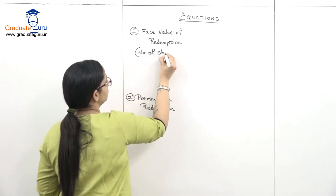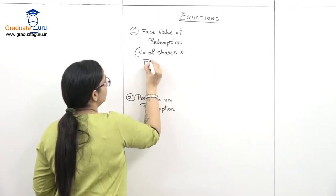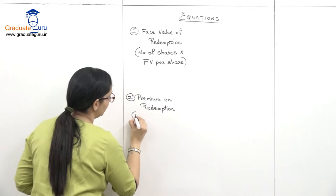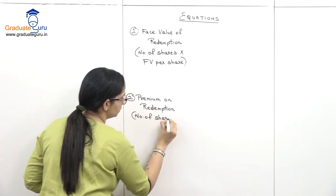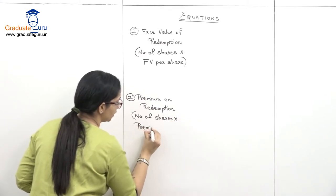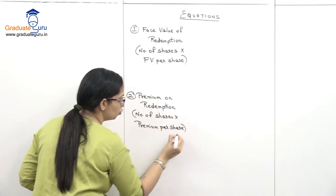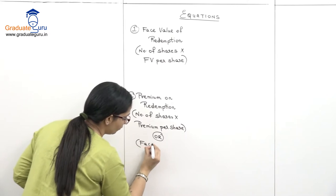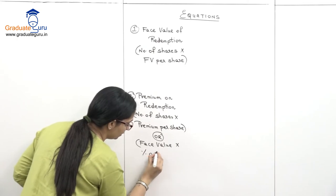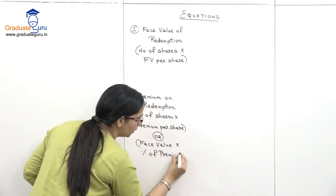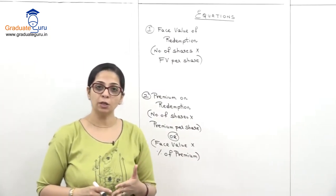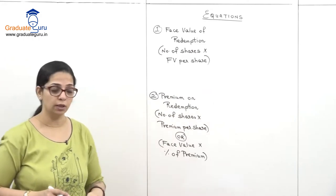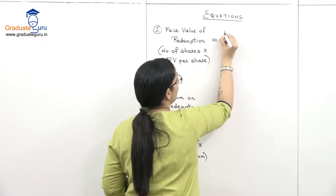For face value, we take the number of shares multiplied by face value per share to get the total face value. For premium, it will be number of shares into premium per share — if it is 1 rupee premium then 1 rupee, if 2 rupees then 2 rupees. Alternatively, premium can be given as a percentage: face value into percentage of premium, such as 5% or 10% premium.